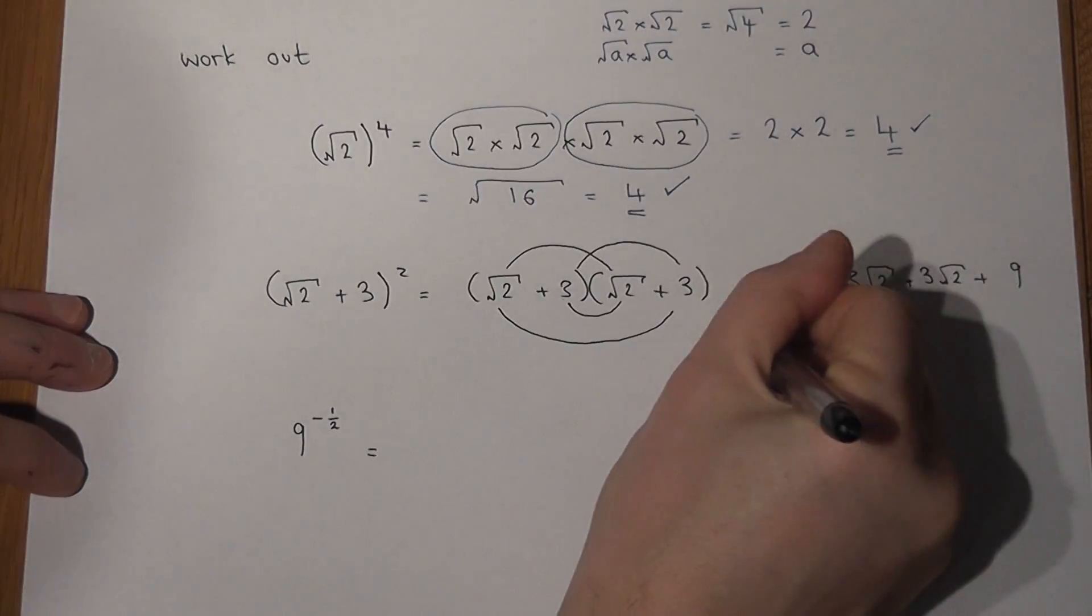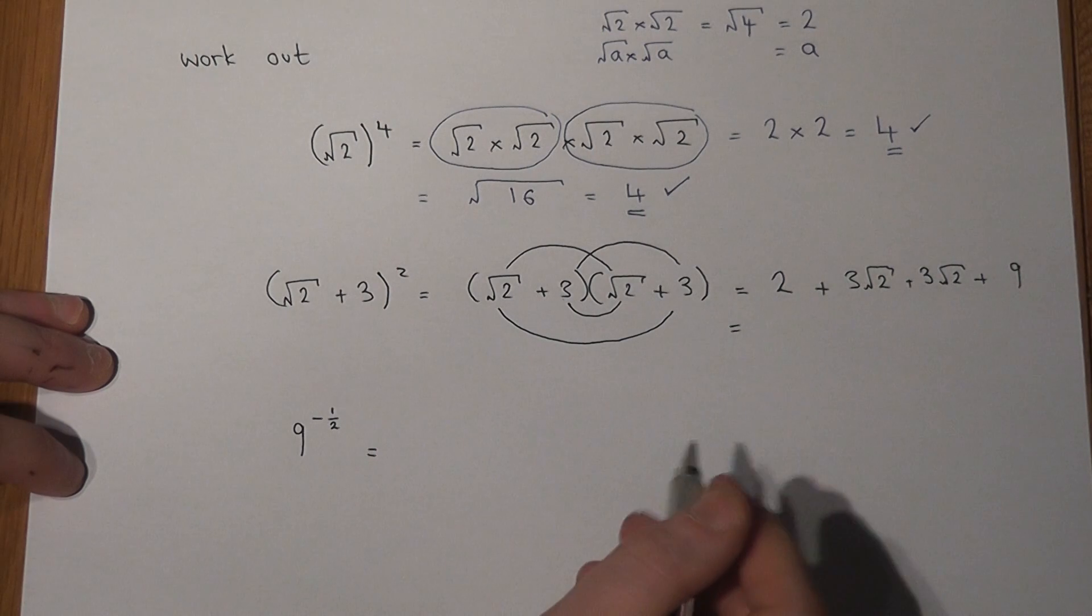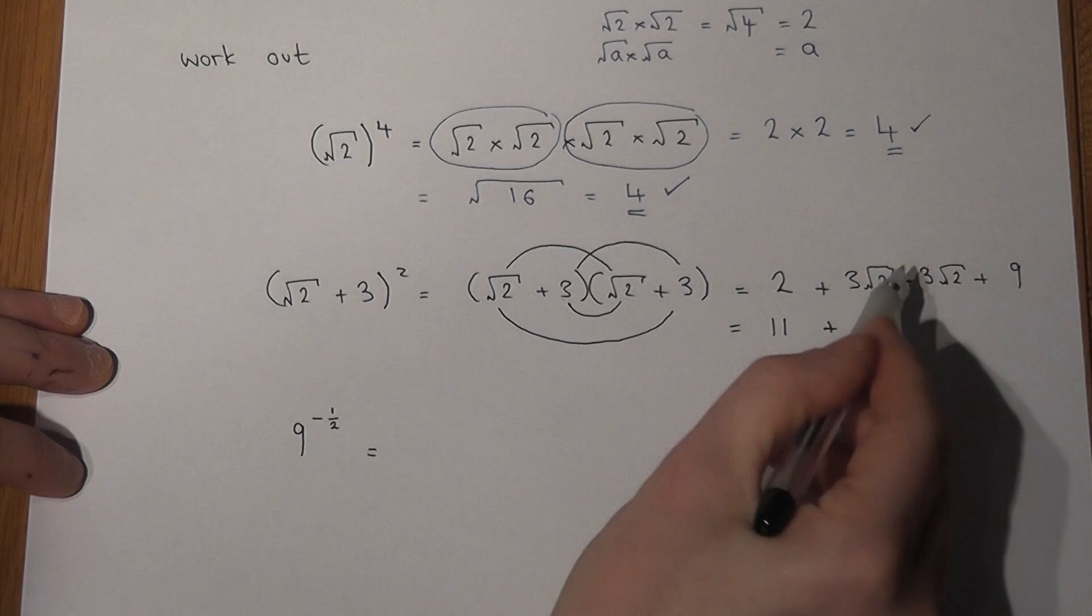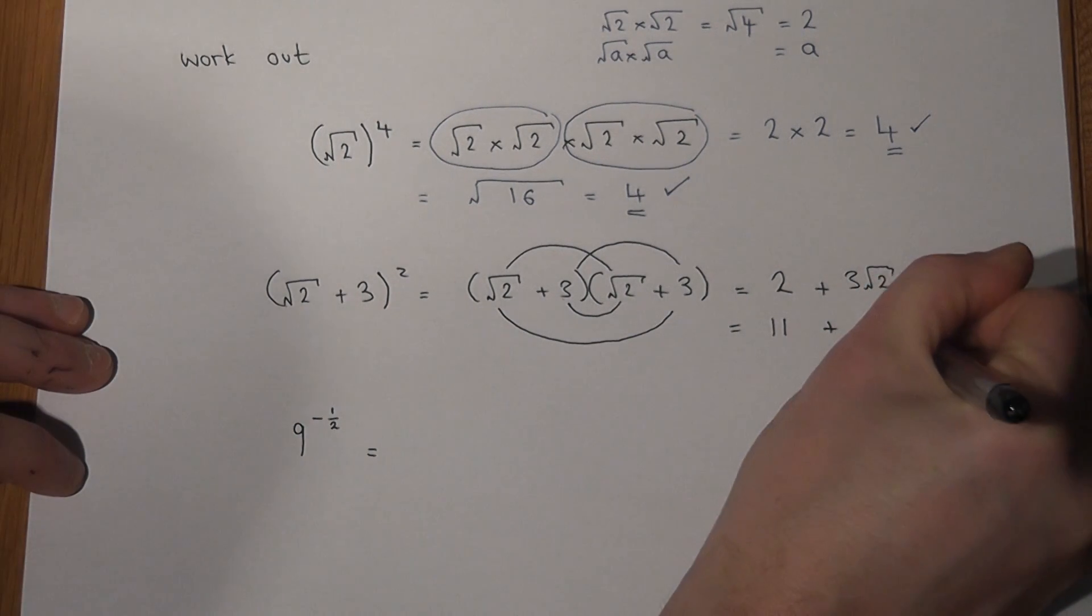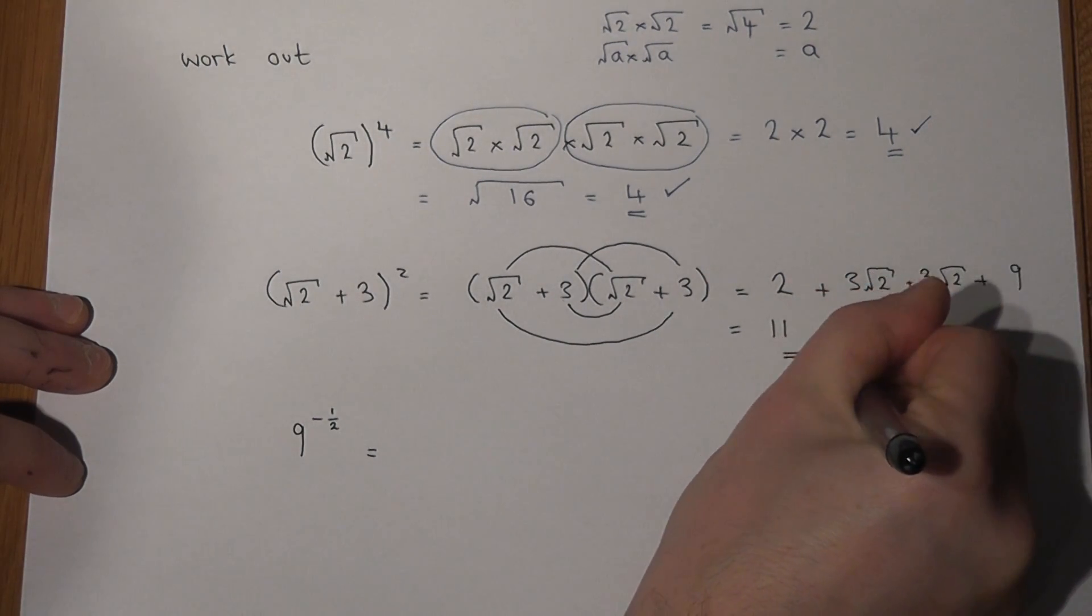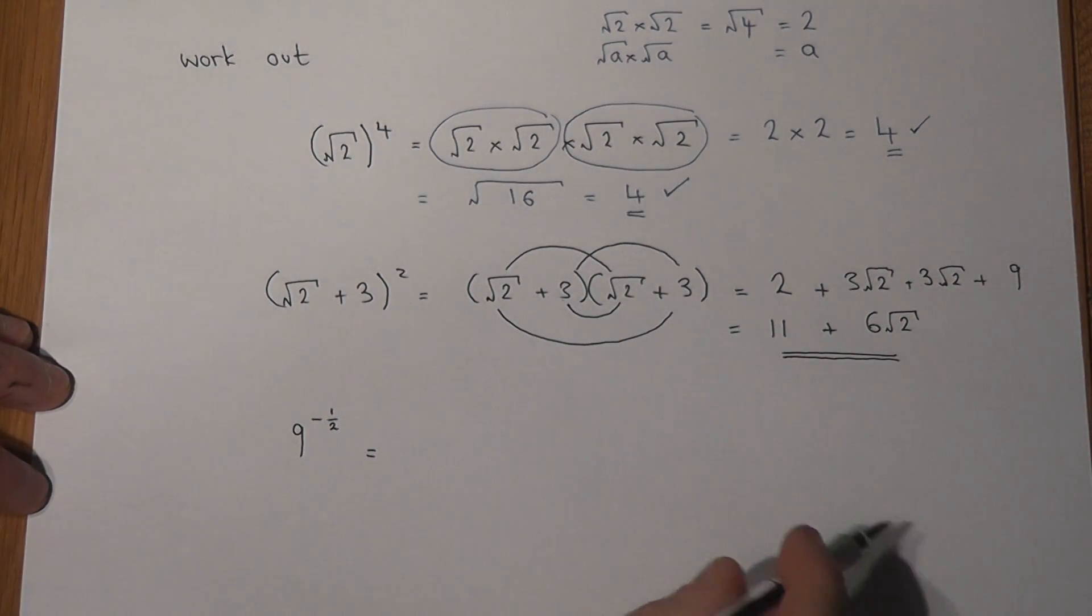Then to finish off, this can be simplified. The integers, the 2 and the 9, add to make 11. And if I've got 3 lots of something plus a further 3 lots of something, it must be 6 lots of that something, which in this case just is 6 lots of root 2. So if I expand and simplify, the answer is 11 plus 6 root 2.